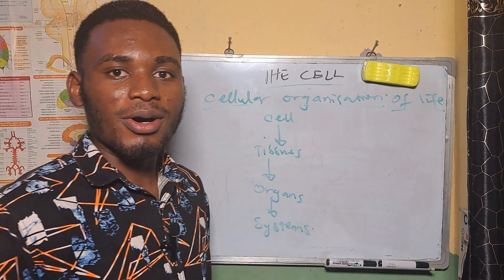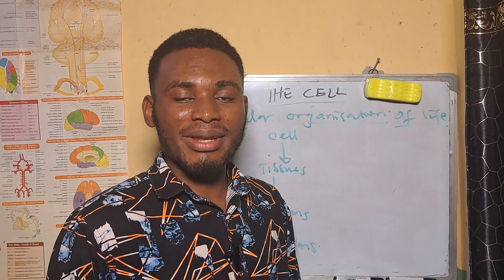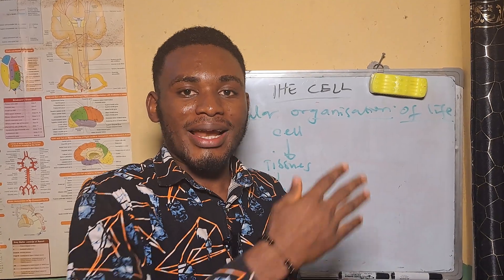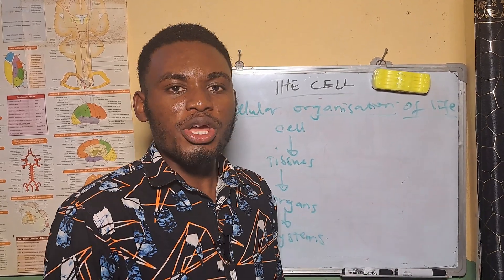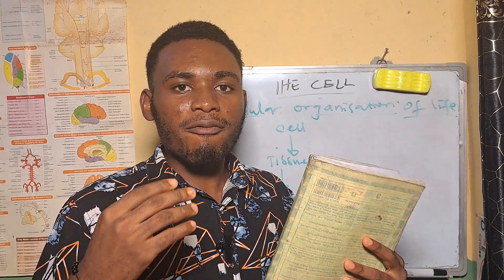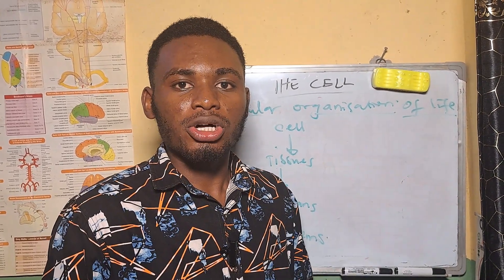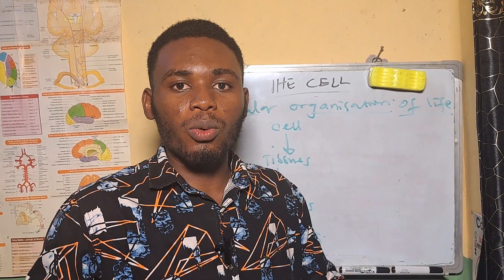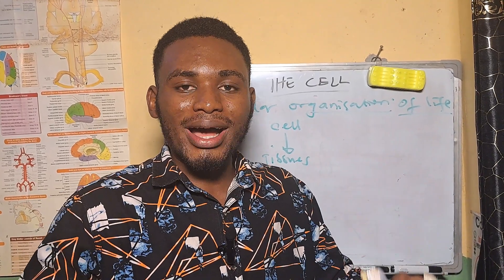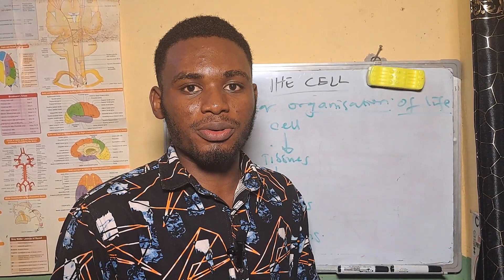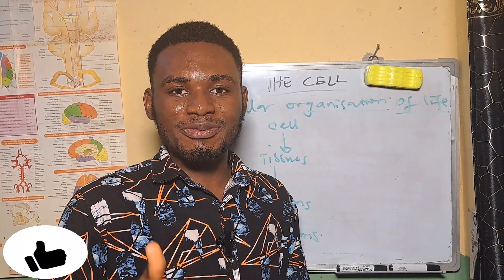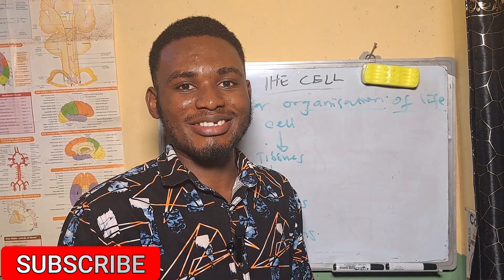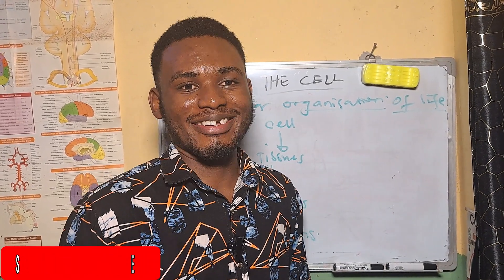That's the wrap-up, guys. I believe by the end of this tutorial you have learned what a cell is, the different organelles of a cell, and also the similarities and differences between a plant cell and an animal cell. If you have any questions, let us know in the comment section. Don't forget to like this video, subscribe to our channel, and share with your friends. Bye for now.